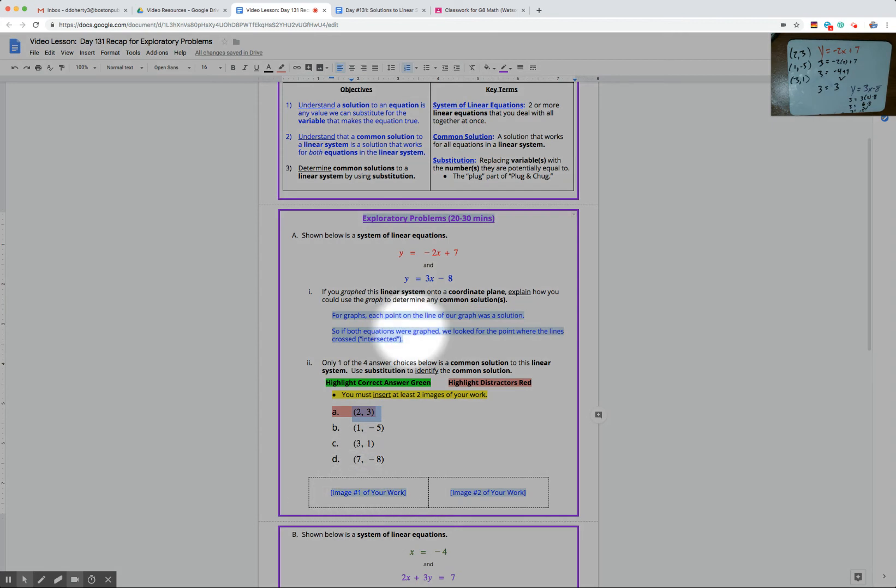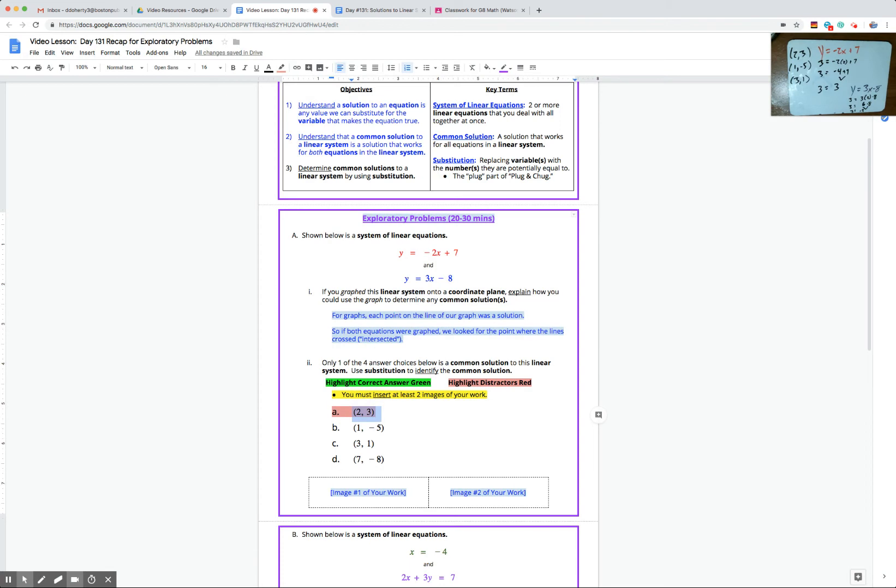Linear systems are complicated. We have two different equations with two variables, an x and a y. We have a bunch of answer choices, so yes, this problem takes some work, but you all should have the skills you need to keep working through and see which one out of B, C, and D is going to be the correct answer. Make sure to insert a second image of your work at some point.